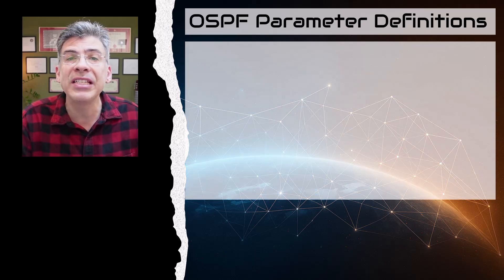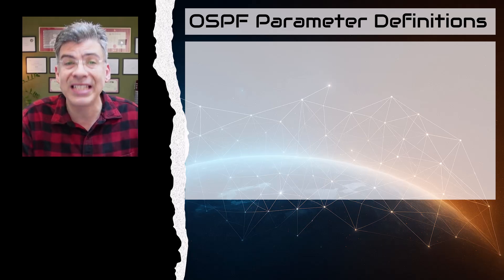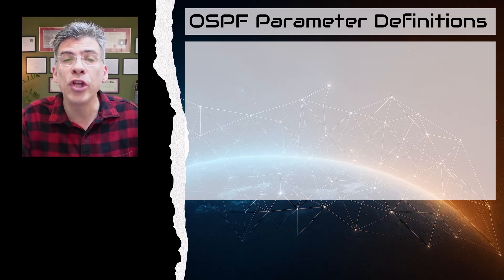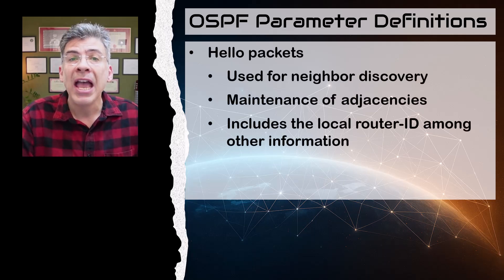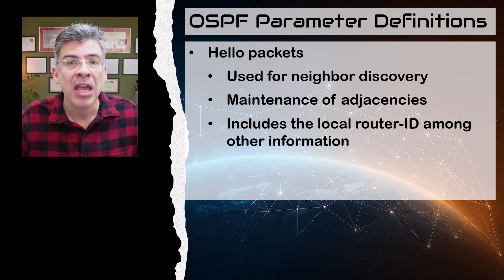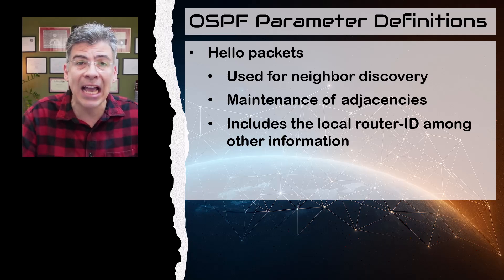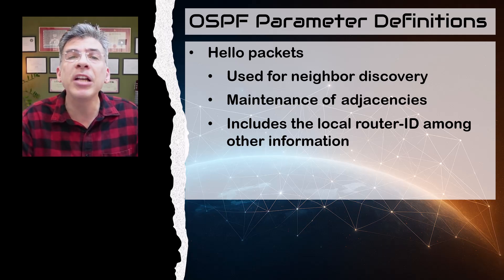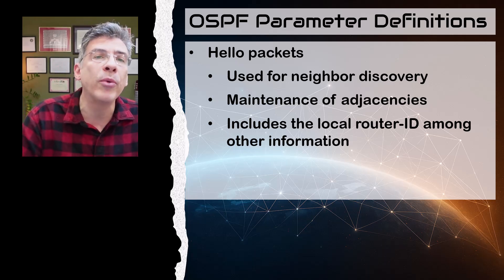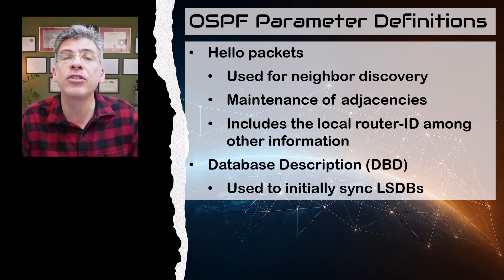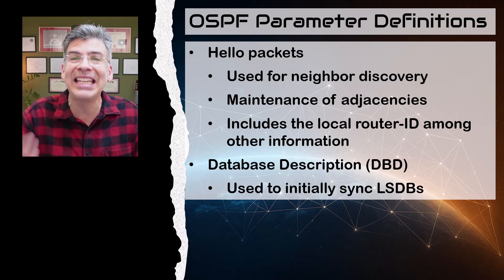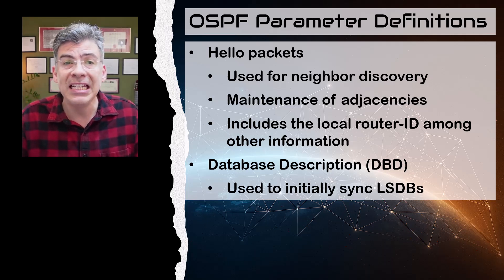OSPF uses a series of messages between OSPF routers to establish adjacencies. The first is what is known as hello packets. These are used for neighbor discovery as well as adjacency maintenance. They contain the local router ID of the router sending out the hello message, but they also contain much more information that is used in various other OSPF processes. Next we have the database description messages, or DBDs. These are used to initially synchronize the link state databases of the two routers. DBDs contain a summary of the local LSDB.